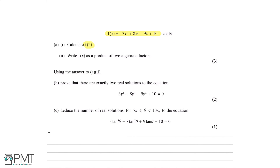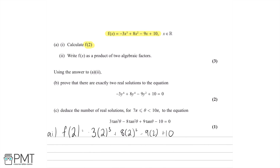This is pretty straightforward. If we have f of x and we're trying to find f of 2, we replace our x's with 2's. So we have minus 3 times 2 cubed, plus 8 times 2 squared, minus 9 times 2 plus 10. Putting this into your calculator, you'll realise that this gives you 0.